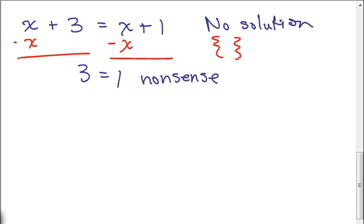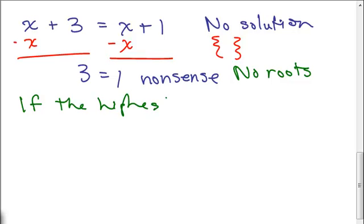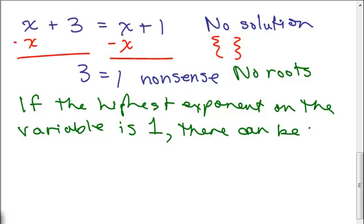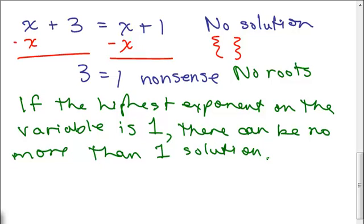We write no solution using empty braces, or just say there are no roots. Whether you say there's no solution, no roots, or show empty braces, the result is the same — no solution to X plus 3 equals X plus 1. If the highest exponent on the variable is 1, there can be no more than one solution. It doesn't mean there will be one solution, but there can't be more than one.